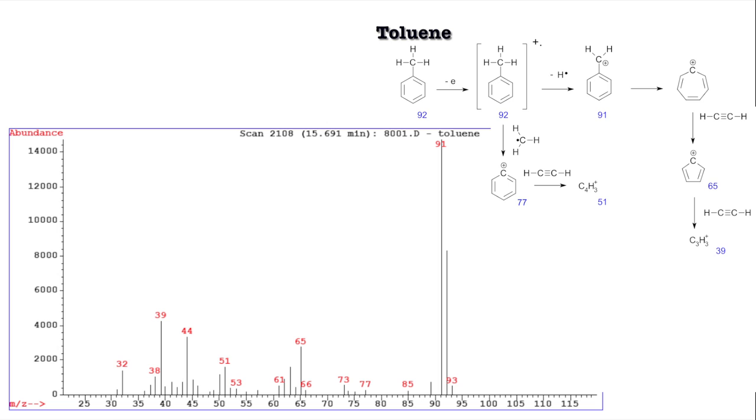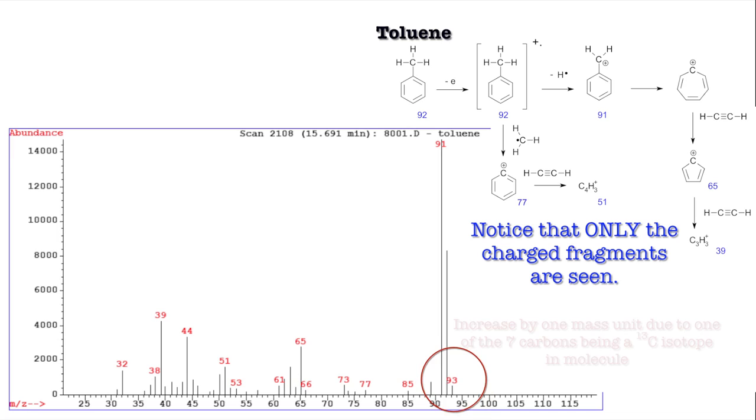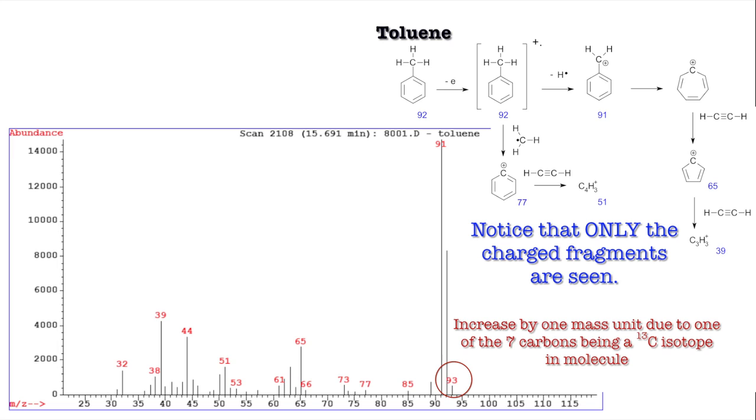In the mass spectrometer, all these little fragments and all these little rearrangements that go on before it reaches the detector can be seen at the detector, and that is why it's such a powerful technique. Every time you put toluene, in this example, into the mass spectrometer, you'll see a spectrum just like this with similar intensities and things like that. And notice as well, if you look there at 93, if you're observing you'll see there's probably an extra mass, and that extra mass is caused by the detection of isotopes. So it's an incredibly powerful technique - you can detect even individual isotopes.